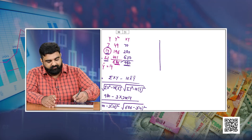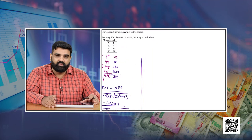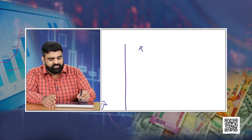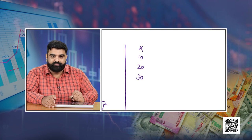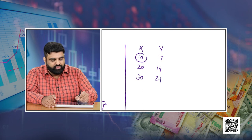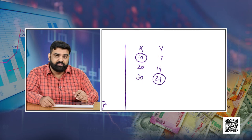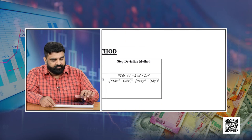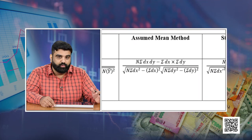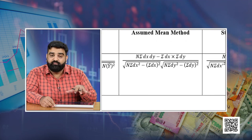Now let us move to the third method: the assumed mean method. Under this method we take an assumed mean rather than the actual mean to calculate the coefficient of correlation. We have x as 10, 20, 30 and y as 7, 14, 21. I am assuming 10 to be the assumed mean for the x series and 21 to be the assumed mean for the y series. The formula is: n sigma dx·dy minus sigma dx times sigma dy, upon the square root of (n sigma dx-squared minus sigma dx whole squared) multiplied by the square root of (n sigma dy-squared minus sigma dy whole squared).